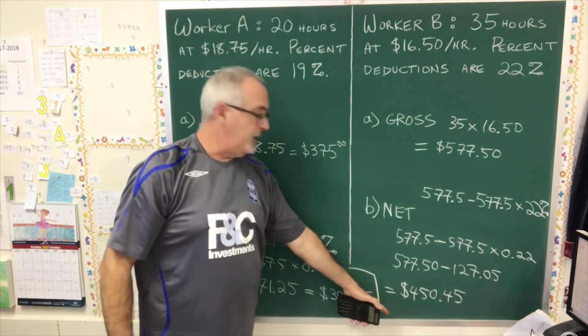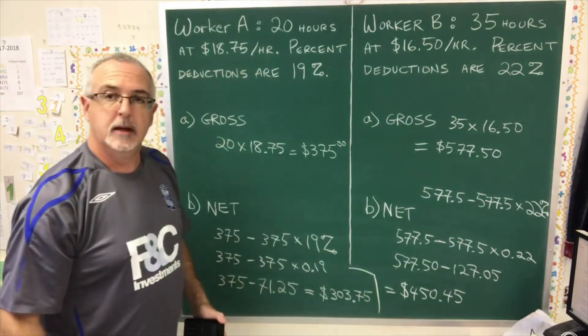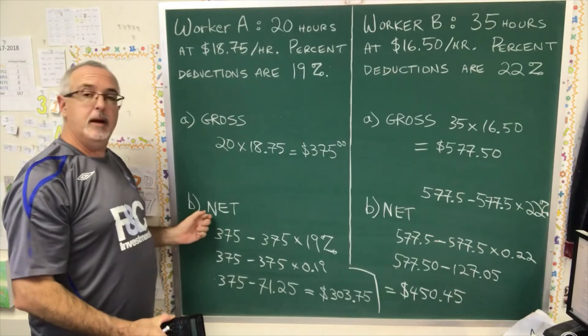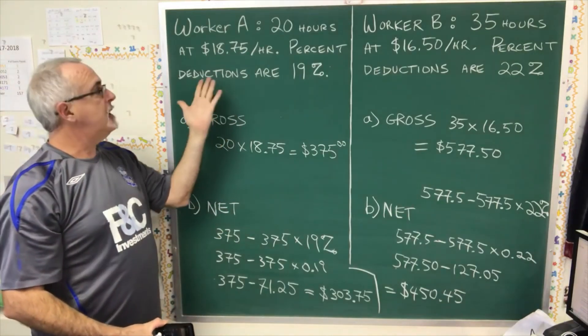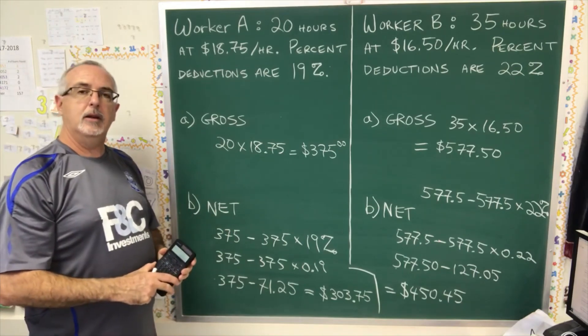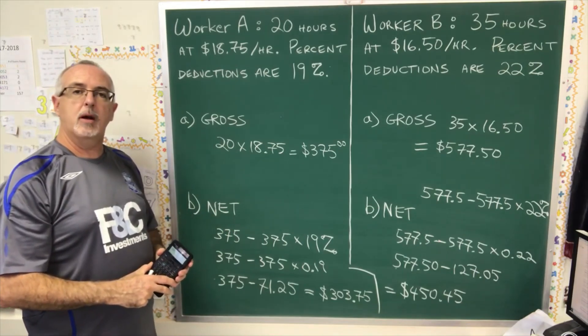That's our final answer, so we need the unit of measure, which is dollars. This is how we calculate gross pay and net pay when we know our number of hours worked, our hourly wage, and the percent deductions. That's today's Daily Dose of Math. Please like, subscribe, and share.